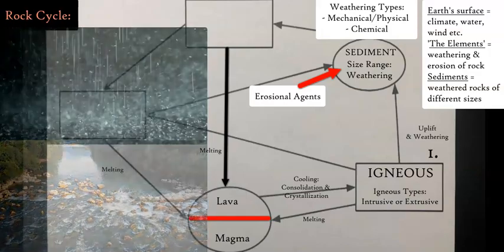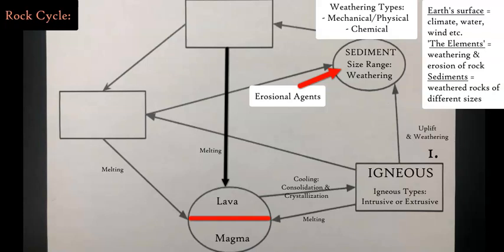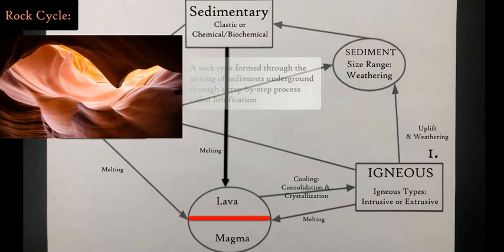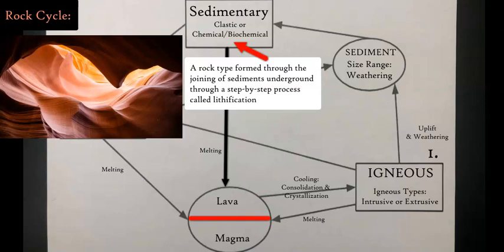They will form our next rock which is called sedimentary. Put a number two in there to show that the second rock kind of formed in this cycle. Igneous is the first. Sedimentary rock can be clastic, organic, or chemical based on the sediments that it's derived from.